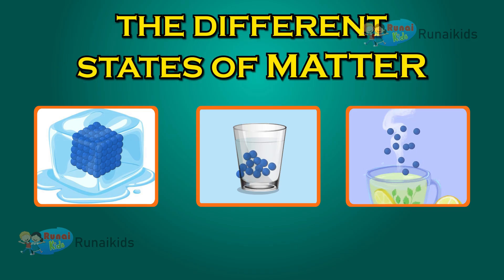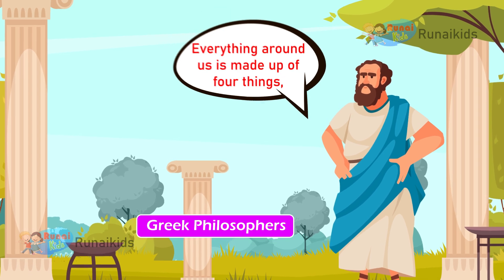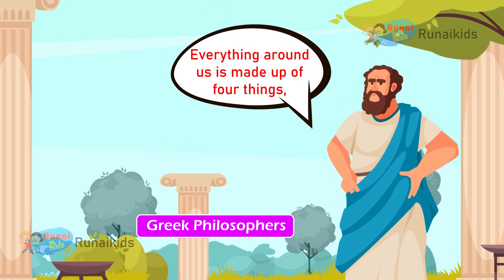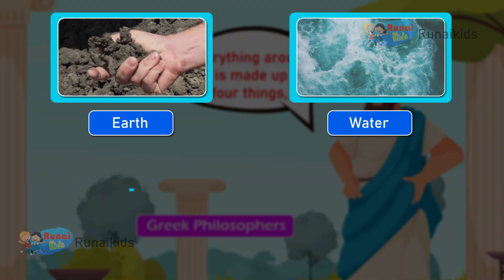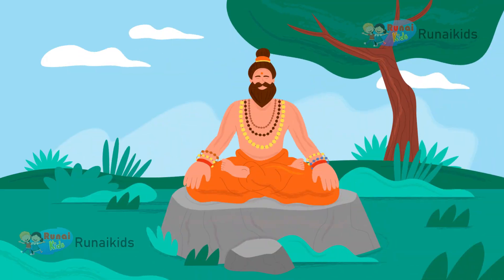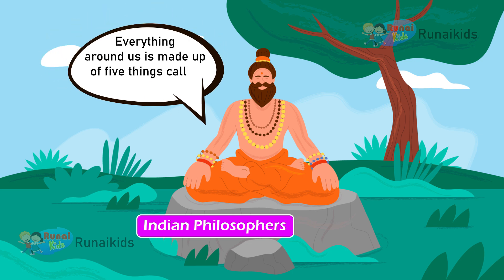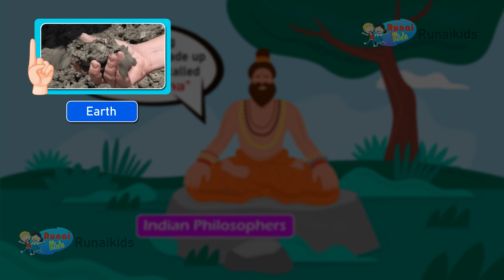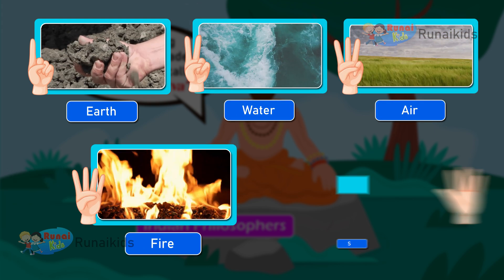According to Greek philosophers, everything around us is made up of four things: earth, water, air, and fire. Meanwhile, according to Indian philosophers, everything around us is made up of five things called Pancha Tattva — that is, earth, water, air, fire, and sky.